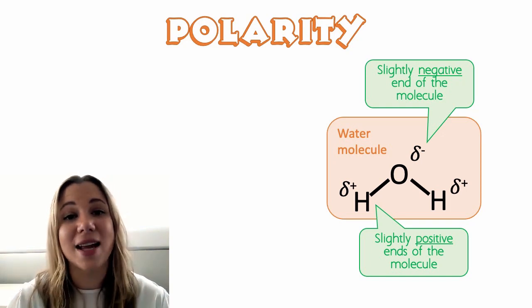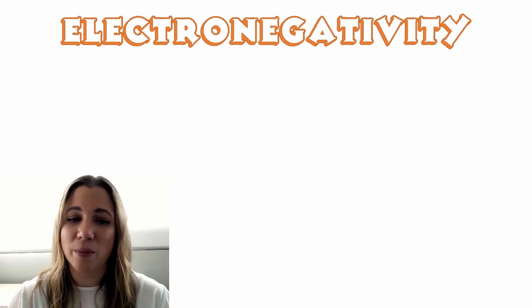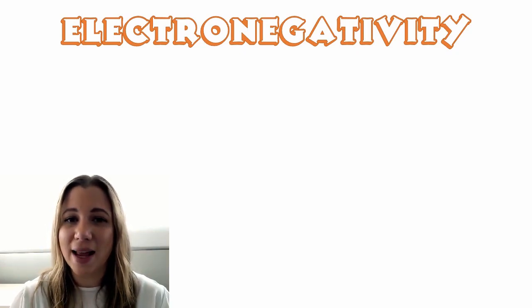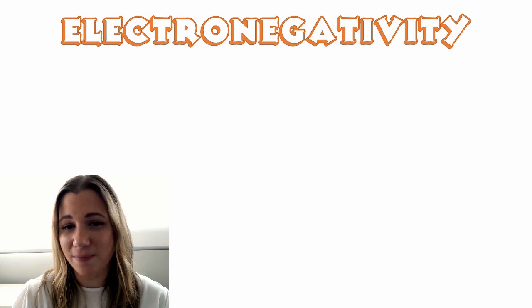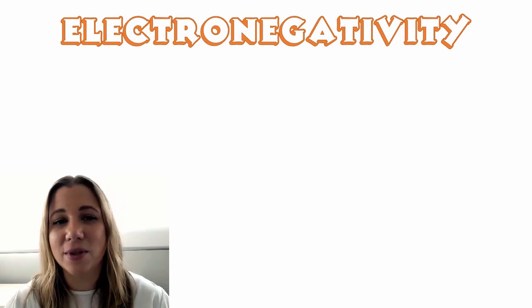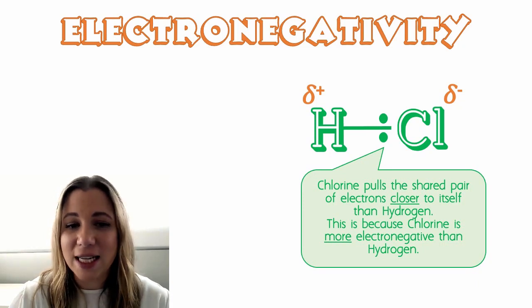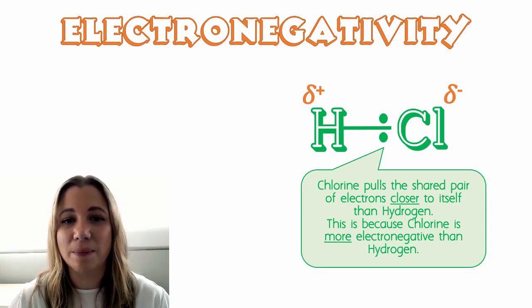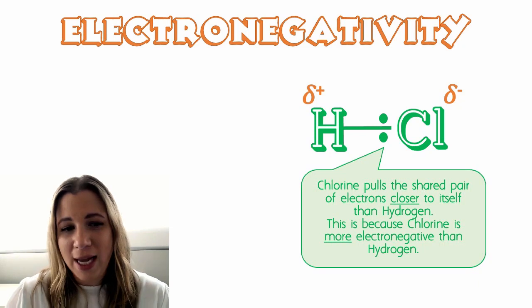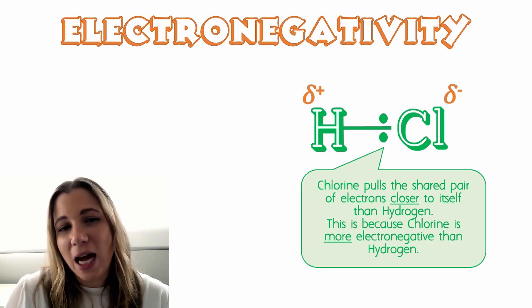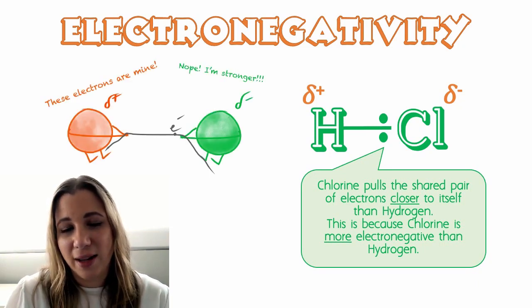The answer is electronegativity. When a covalent bond is formed between two atoms, unless they are of the same atom, then the two atoms may have a different electronegativity. Electronegativity is the force by which an atom actually pulls an electron towards itself. It is like the two atoms are playing a tug of war with the shared electrons.